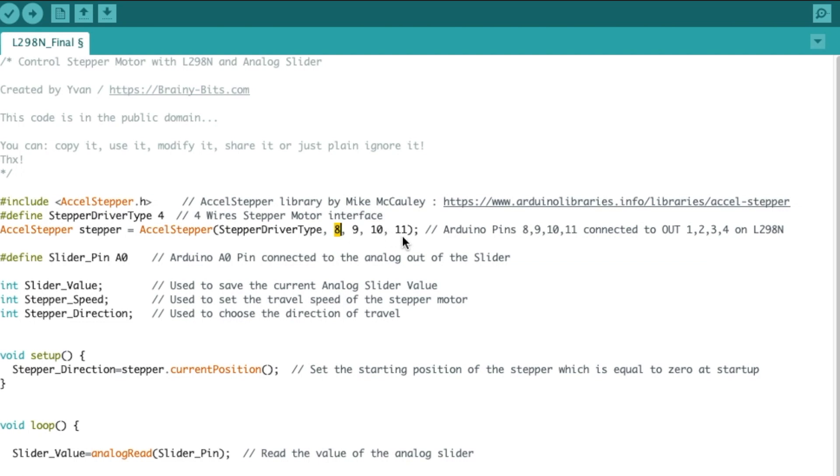And the pins 8, 9, 10, and 11 on the UNO are connected to the out 1, 2, 3, and 4 on the L298. Then we're defining the slider pin, the analog slider that we saw. That's on pin A0 on the UNO. Then we have some variables here. The value of the slider at the moment. Then we have the stepper speed and stepper direction, which will be calculated depending on the analog slider value here.